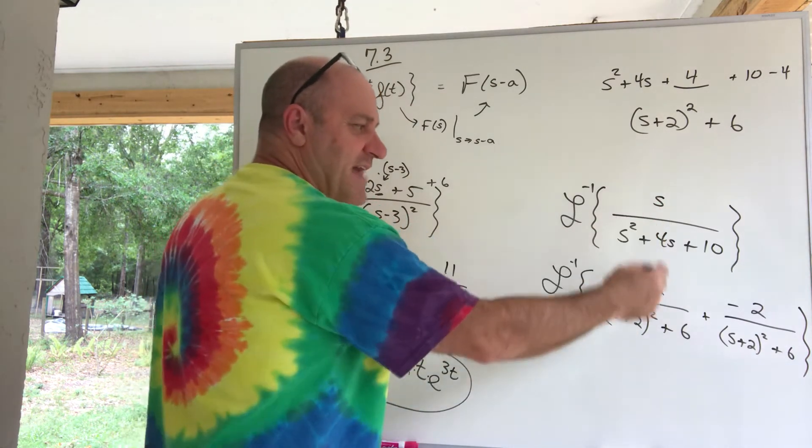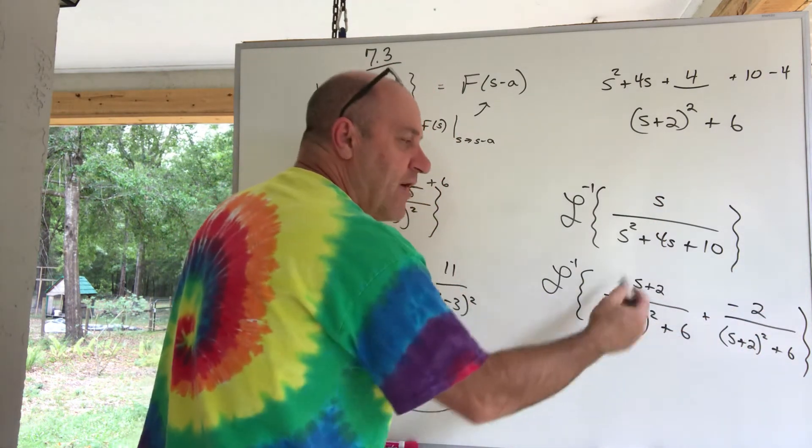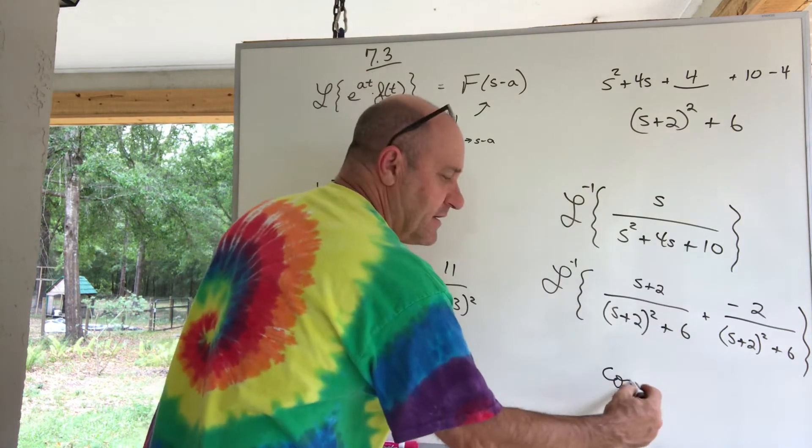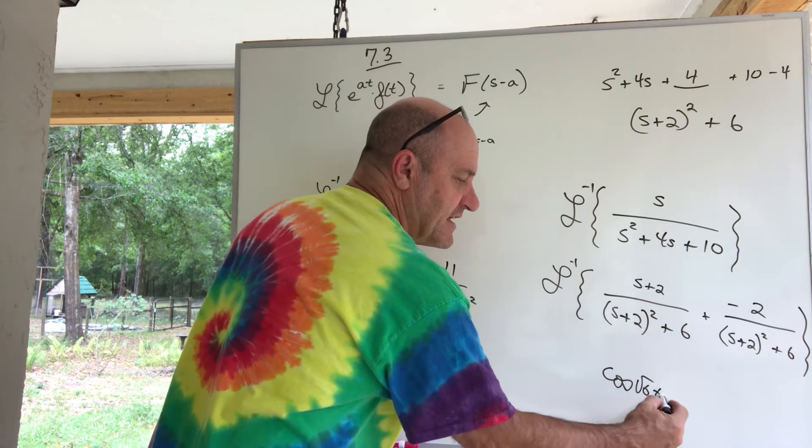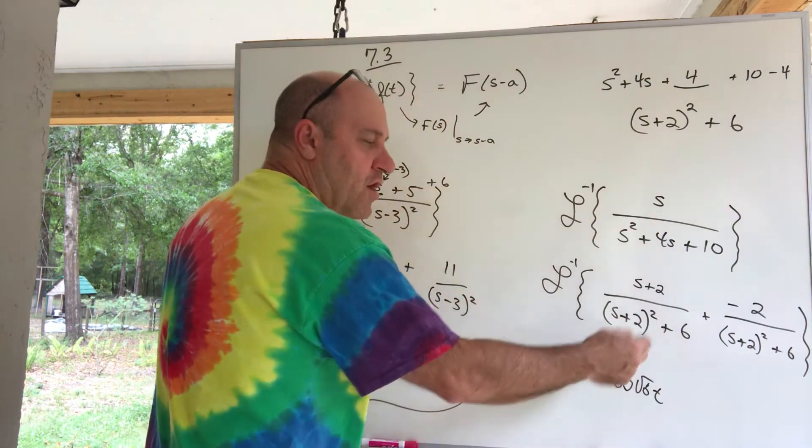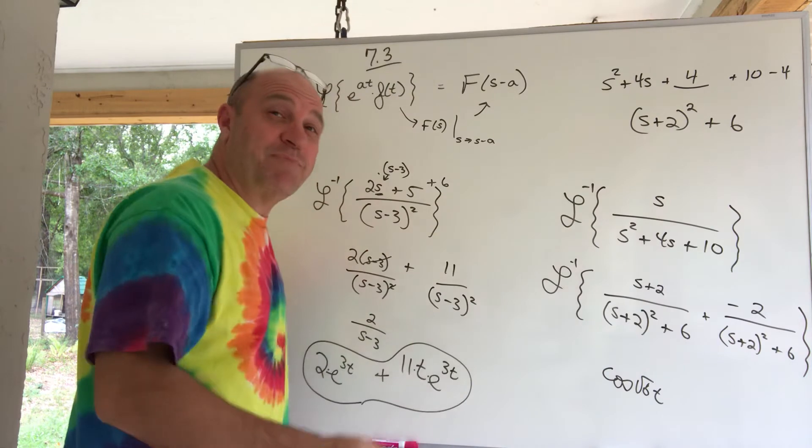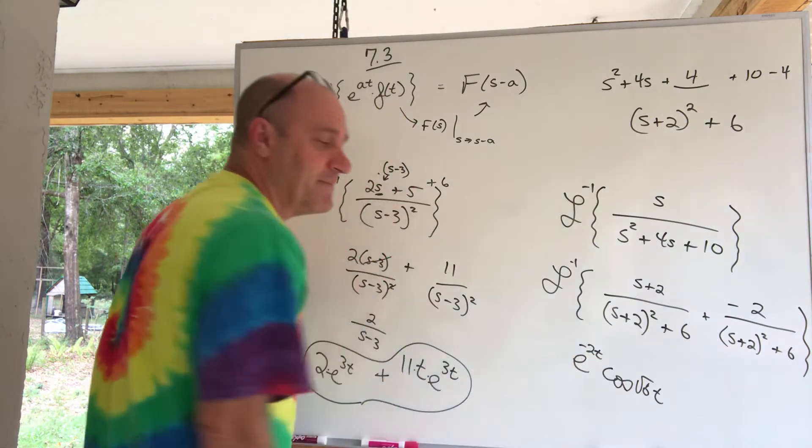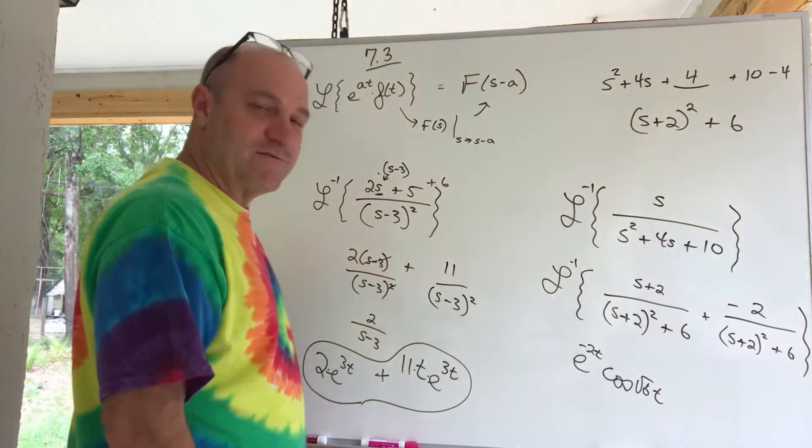So, I take that s, I add it to, and subtract it to. See, now that's a cosine. That is a cosine square root of 6t. Oh, but with the s, if it was just s's, with the s plus 2 in there, that means it's multiplied by e to the negative 2t. Wow, that's good stuff.